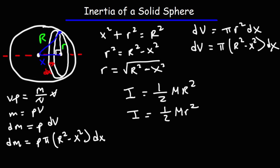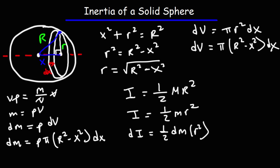Now I'm going to take the derivative, using lowercase m to match. Keep in mind the radius of the disk is constant. So taking the derivative of both sides, we get dI = one-half · r² dm, since r² is constant and the derivative of m is dm.